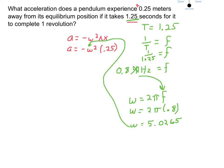Also, if you didn't want to go through all these steps, you could realize that frequency is the same thing as the inverse of the period. That means if you substitute 1 over T in for frequency, angular frequency equals 2 pi divided by the period. That would have made it one step shorter.